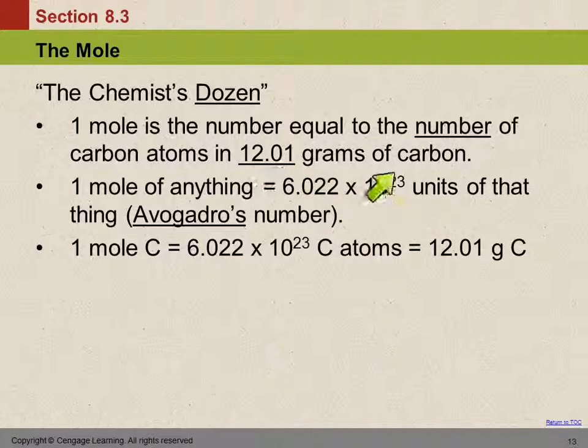Another definition is one mole of anything is 6.022 times 10 to the 23rd units of that thing. And this number here, 6.022 times 10 to the 23rd has a name. We call it Avogadro's number, after the man whose work led to the discovery of that number, Amadeo Avogadro.